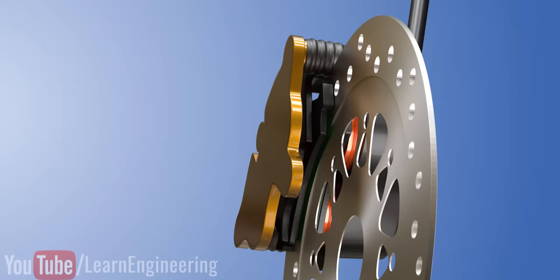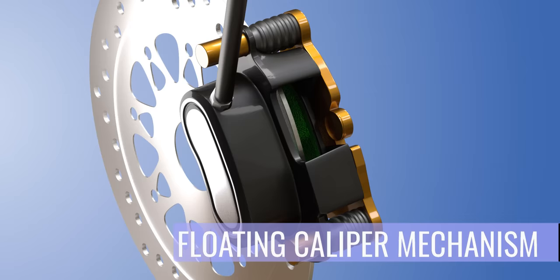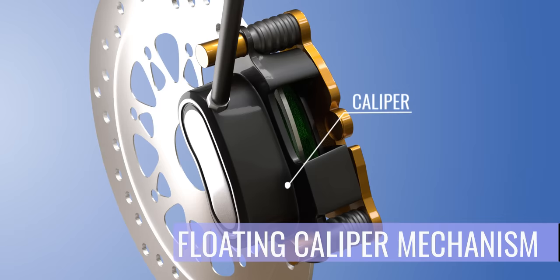This is made possible due to a clever arrangement known as a floating caliper mechanism. It should be noted that the biggest part of this mechanism, the caliper, is not fixed. Rather, it is free to move linearly. A caliper support is fixed to the motorcycle.